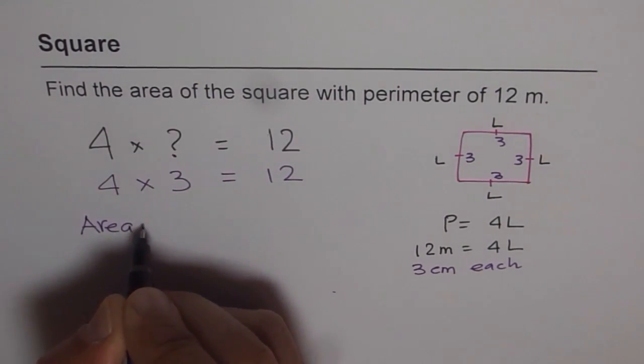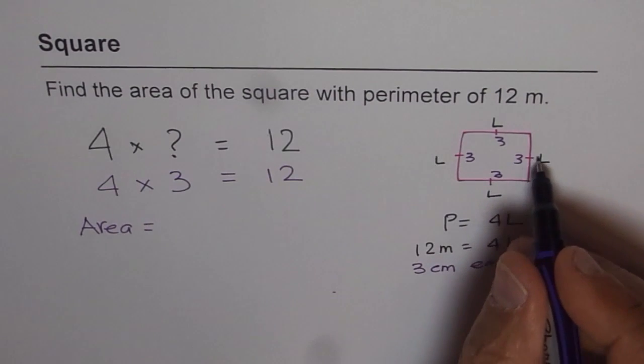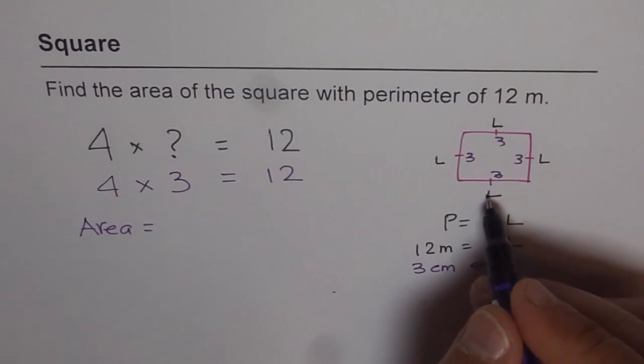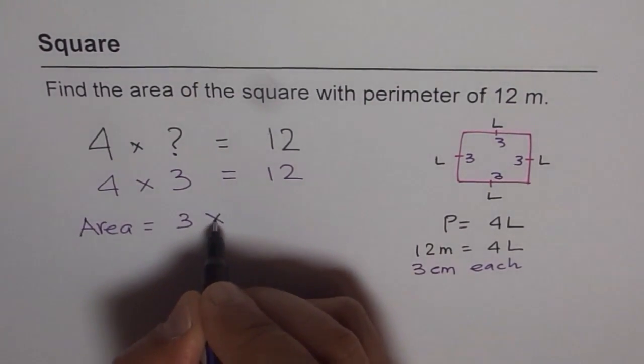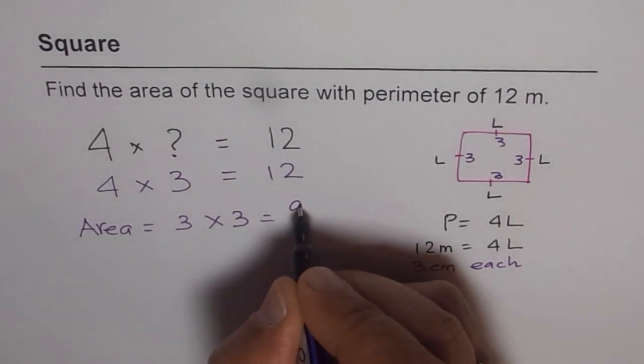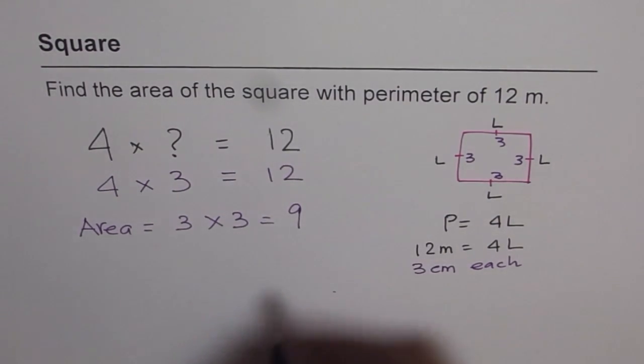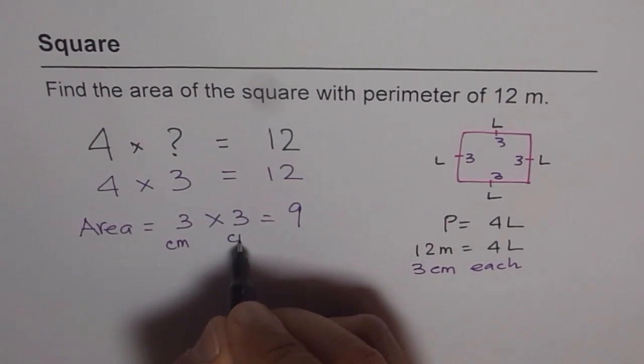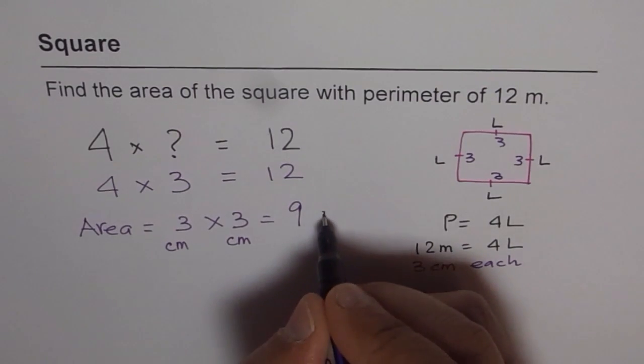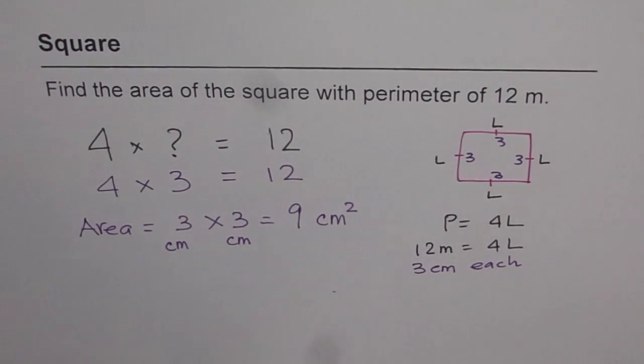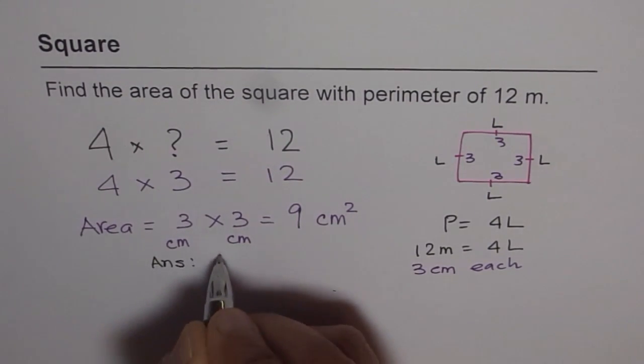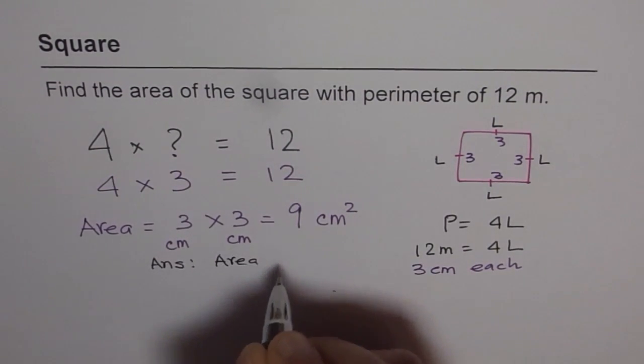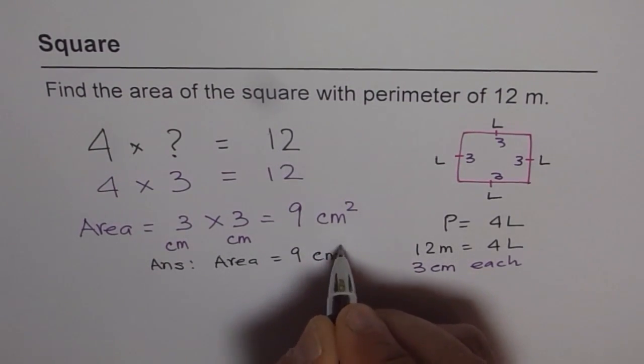Area equals to length into width. So in a square, both are same. So area in this case will be 3 times 3. And what do we get? We get 9. And what are the units? 3 centimeters by 3 centimeters. So units are centimeters squared. So we get an area of 9 centimeters squared. So we can write down our answer. And our answer is area equals to 9 centimeters squared.